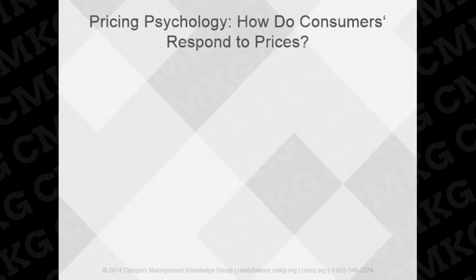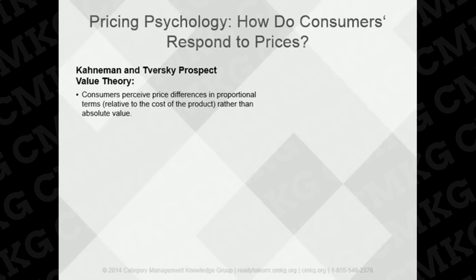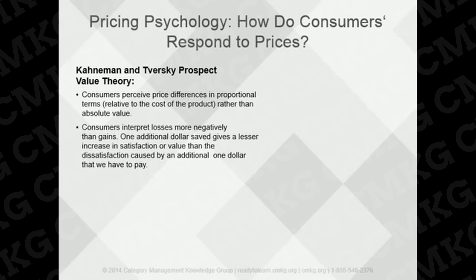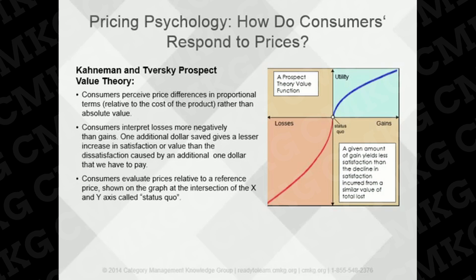Pricing is both an art and a science. Here's a great model introduced by Kahneman and Tversky in 1979 called the Prospect Value Theory. It identifies consumer behaviors in relation to pricing that are still very relevant today. In net, consumers perceive price differences in proportional terms rather than absolute value, and they interpret losses more negatively than gains. For example, one additional dollar saved gives less increase in satisfaction than the dissatisfaction caused by a $1 they have to pay. Consumers also evaluate prices relative to a reference point, the status quo, shown at the intersection of the x- and y-axis on the graph.